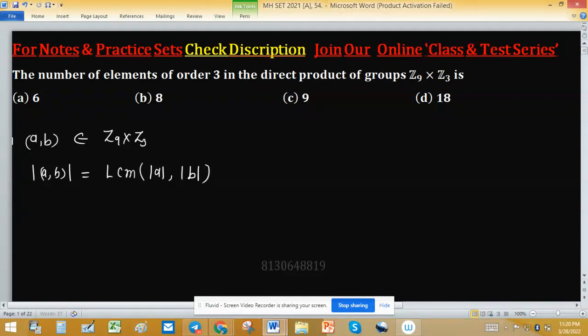We have to find the number of elements of order 3 in this direct product. Suppose (a,b) is such an element having order 3. It means we want LCM of this one equals 3. How can we get LCM equals 3? When order of a becomes 1 and order of b is 3, when order of a becomes 3 and order of b is 1, and both have order 3.